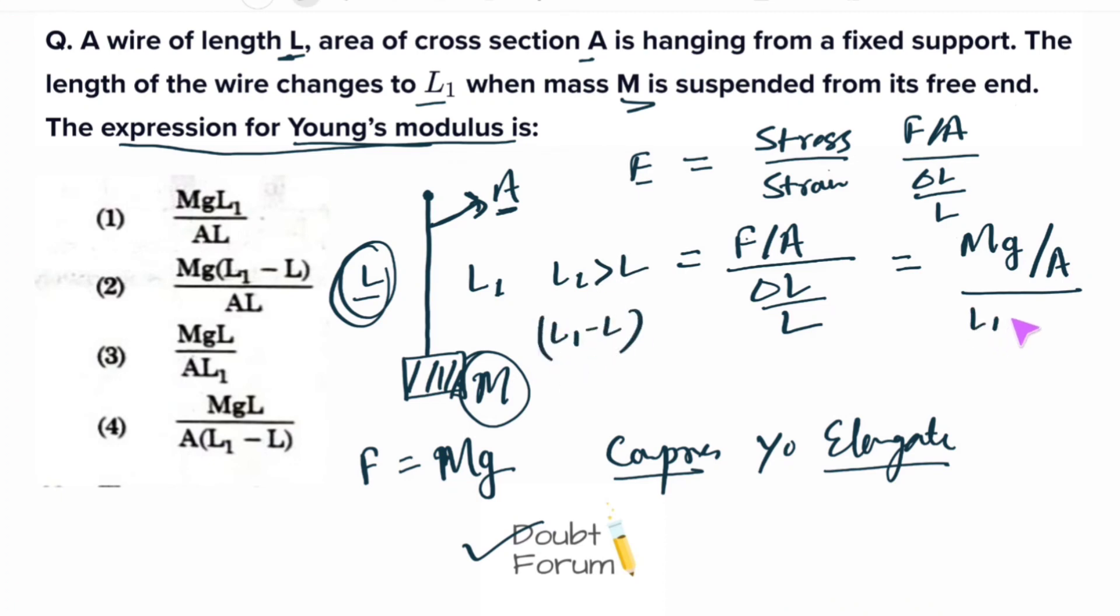So L₁ minus L divided by the initial length. When the mass was not suspended, the length was L. So here we will write L.